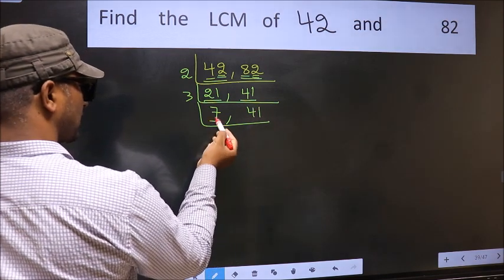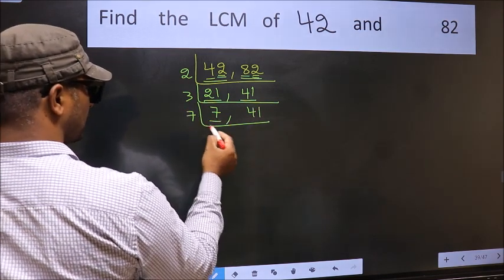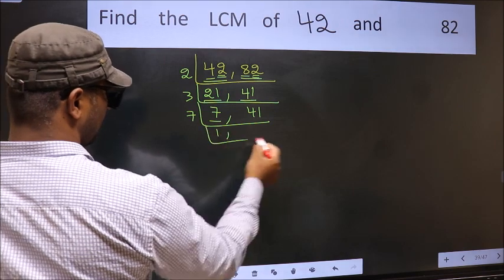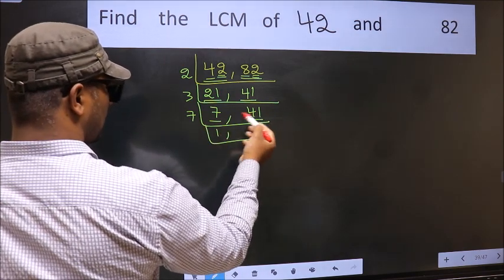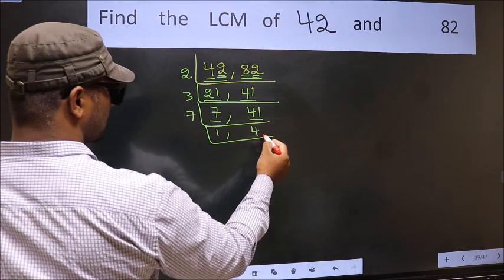Now here we have 7. 7 is a prime number, so 7 times 1 is 7. The other number 41, not divisible by 7, so we write it down as it is.